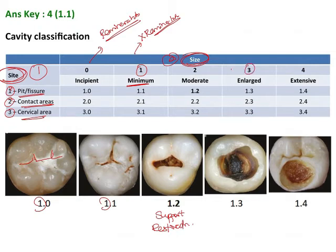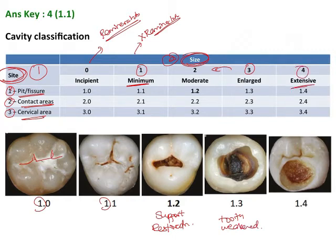Size 3 is enlarged — the lesion has expanded beyond what is seen in moderate, and the tooth structure has become weakened. Size 4 is extensive, seen when there is loss of bulk of the tooth structure and complete loss of the cuspal or incisal edges of the tooth.